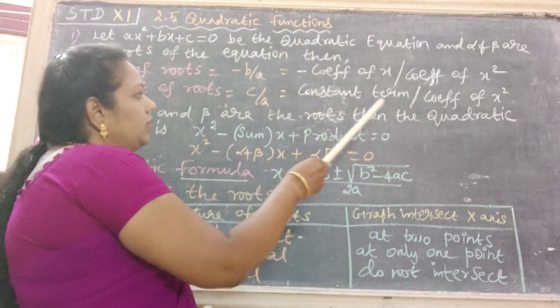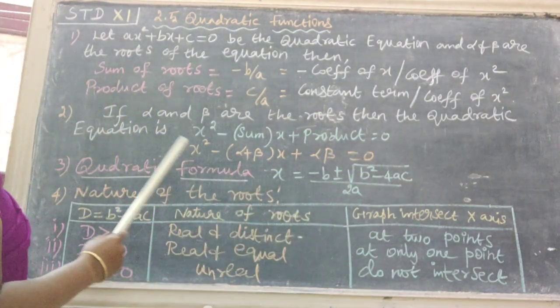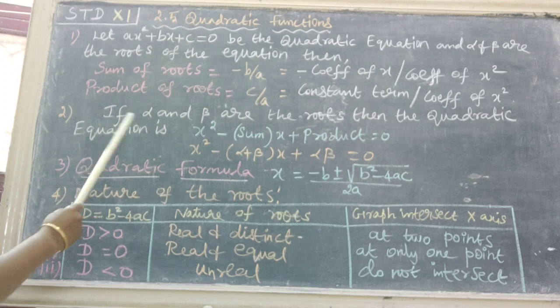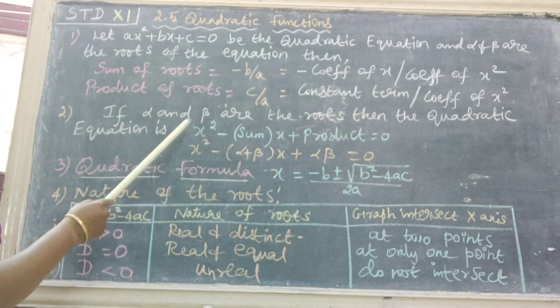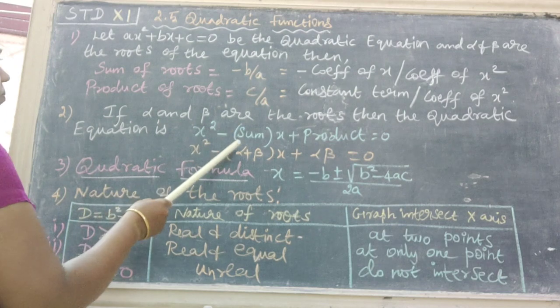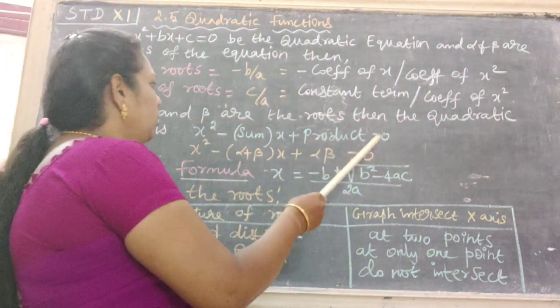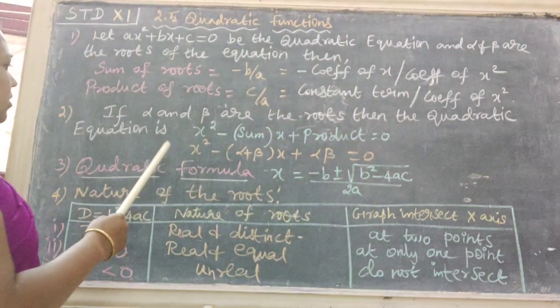Second point: if alpha and beta are the roots, then the quadratic equation is x² - (sum)x + product = 0, that is, x² - (α + β)x + αβ = 0.